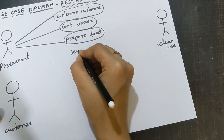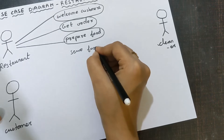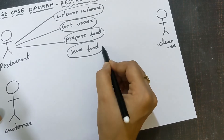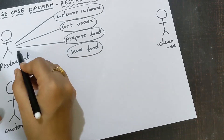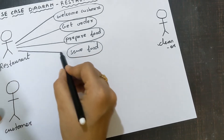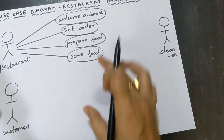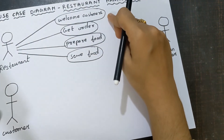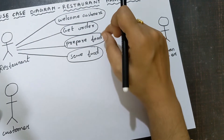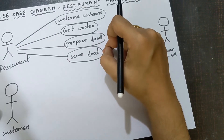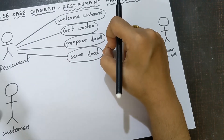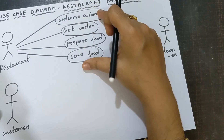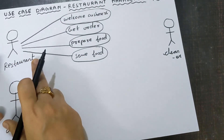Next, serve food. After the food is ready, you need to serve that mutton biryani to the customer — so you are serving food in the restaurant. Join this using the connector. So the use cases for the actor restaurant are: welcome customer, get order, prepare food, and serve food.